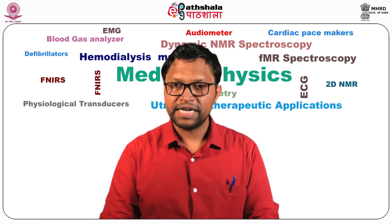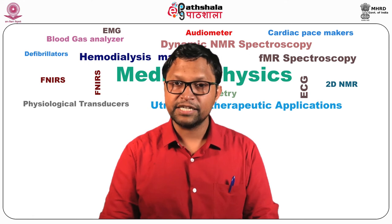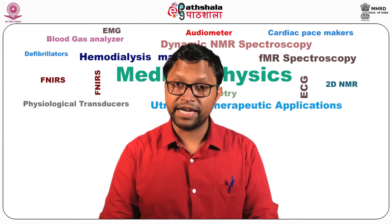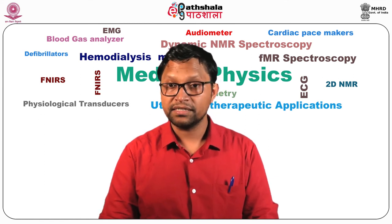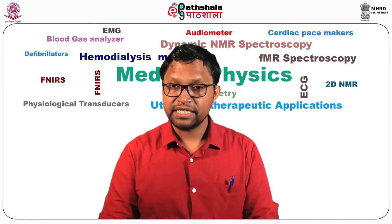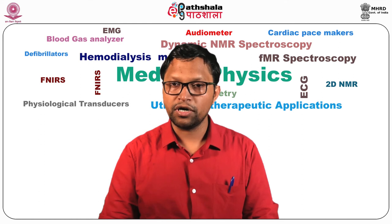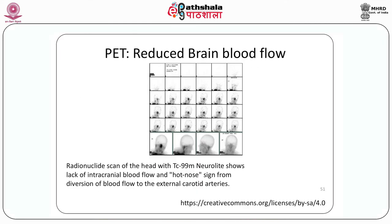This slide shows a PET scan of a pathological brain. It shows decreased blood flow throughout the brain. Since the nose is outside the brain and has intact circulation, in the scan of the head only the nose is visible — this is called the hot nose sign. This indicates poor intracranial blood flow. For this, technetium-99 is used. The PET can also be used to measure microvascular perfusion.